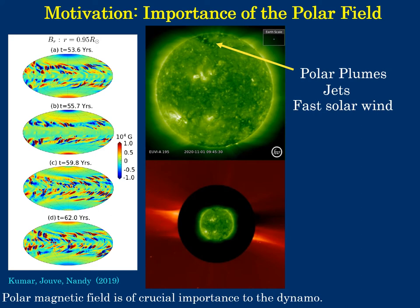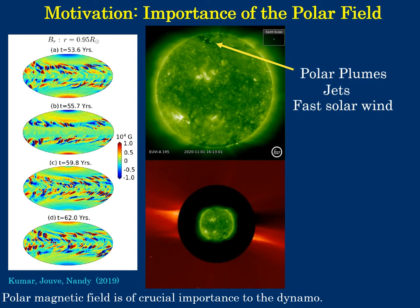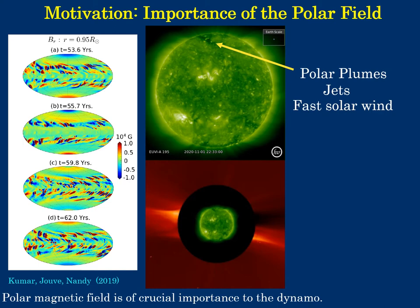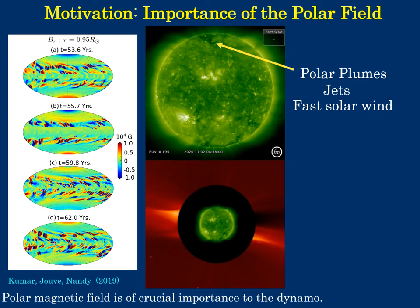The polar magnetic field is a proxy of the global internal poloidal field. While the large-scale magnetic field distribution and its strength acts as seed for the following solar cycle, the localized field configuration plays an important role in driving polar plumes, jets, and shaping the fast solar wind, which are key modulators of space weather.